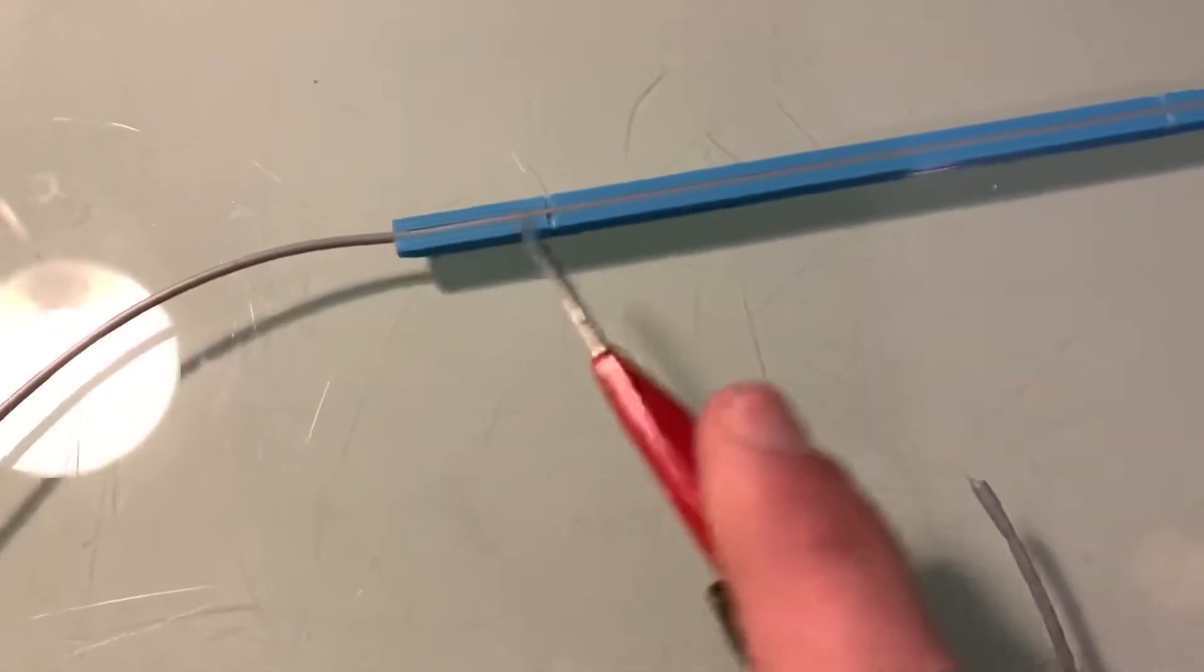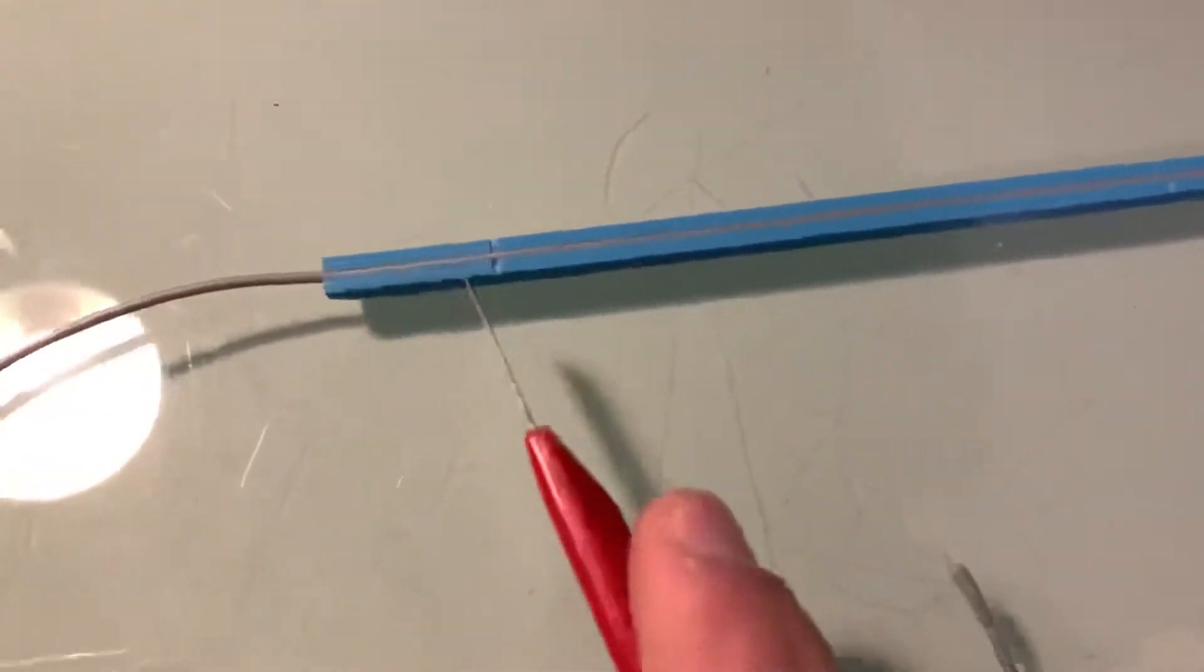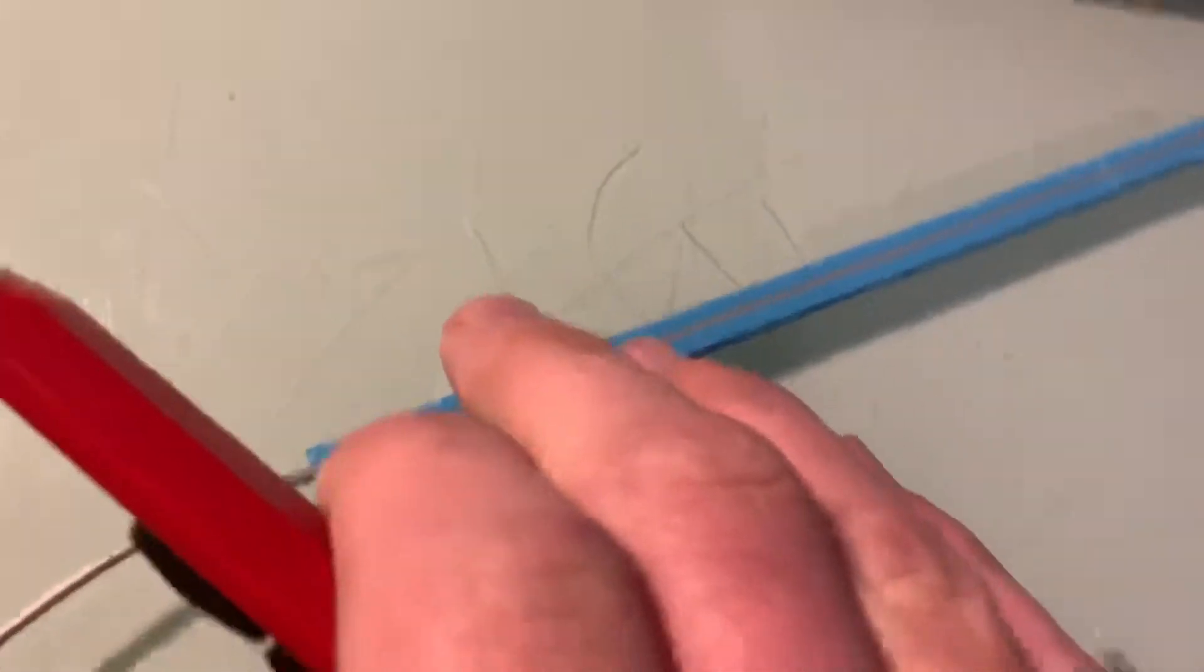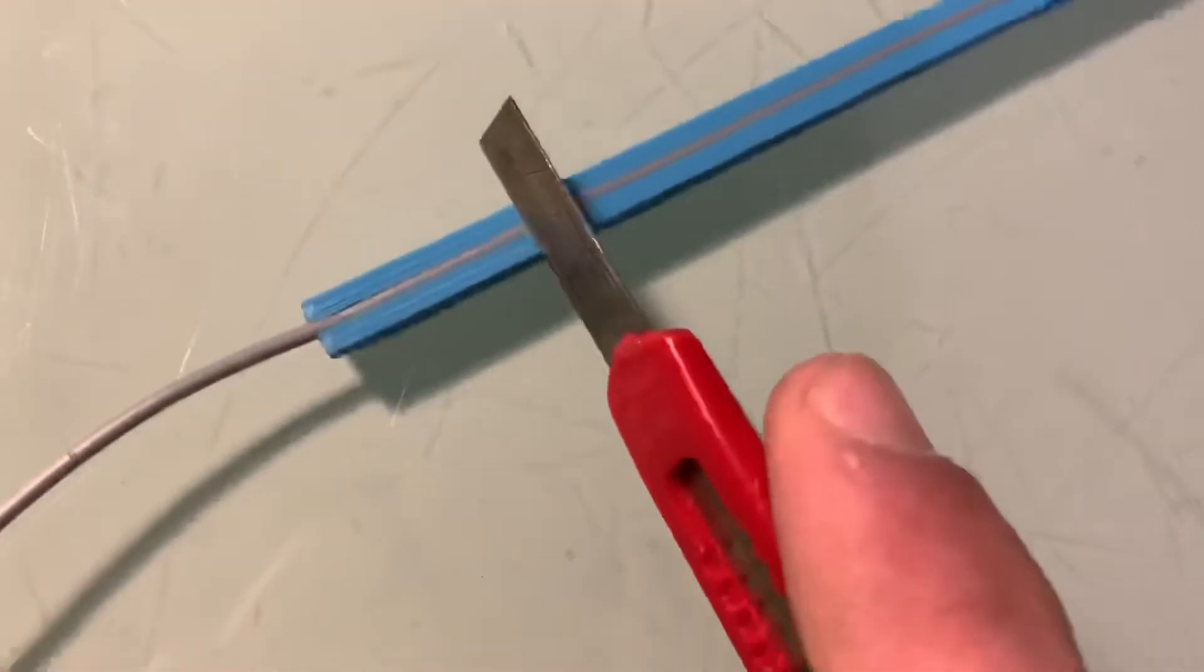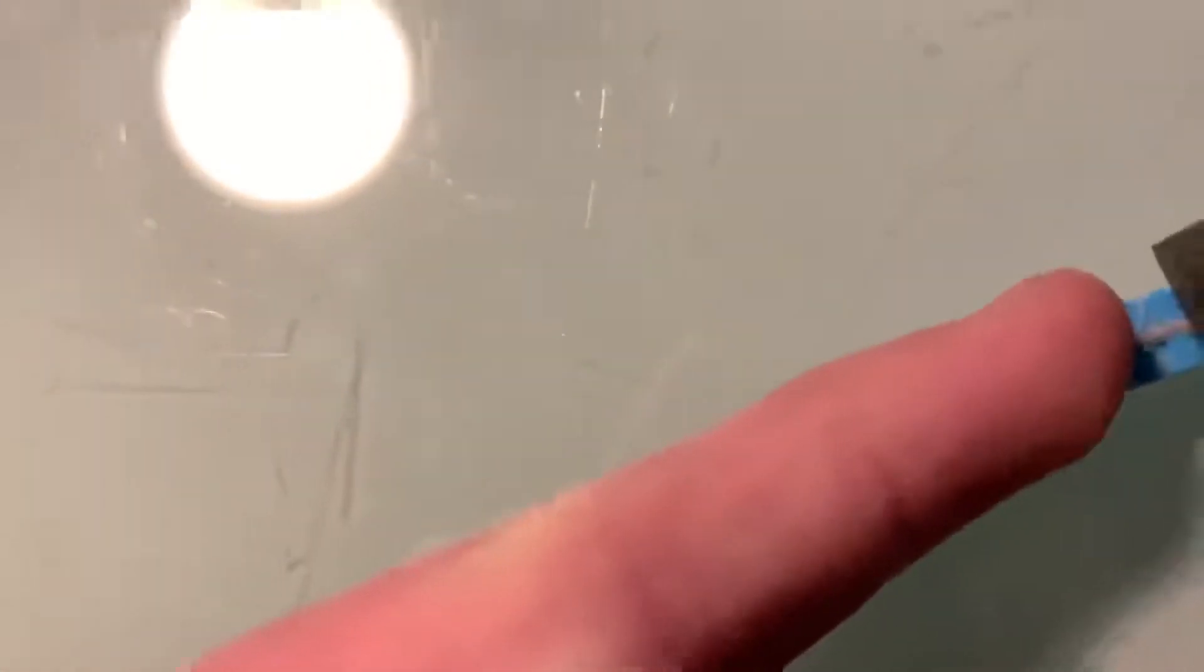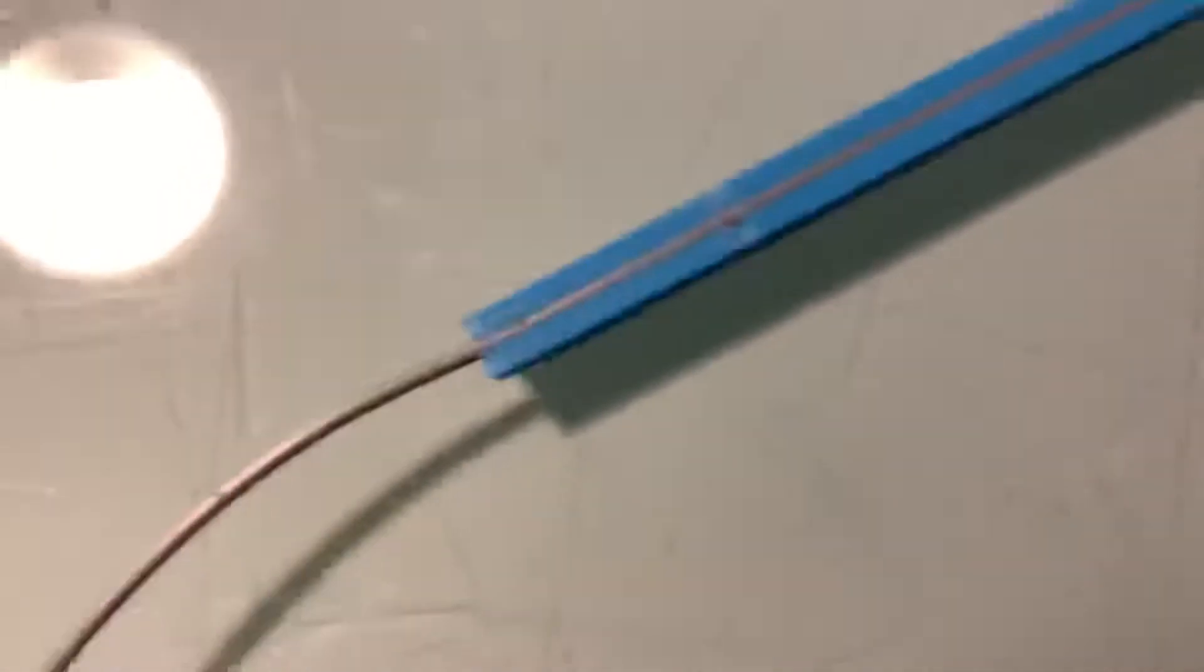So you're going to input it like so, and then you're going to get a knife like this, a box cutter, and then you're going to score it. I would recommend you do this with two hands.